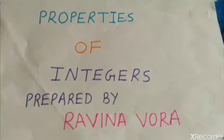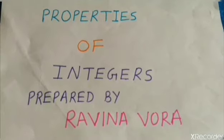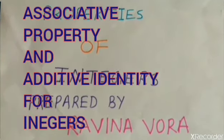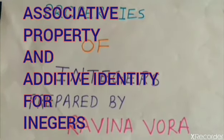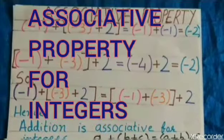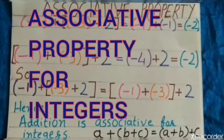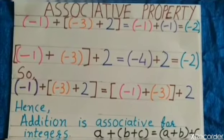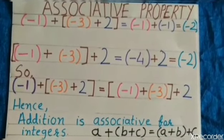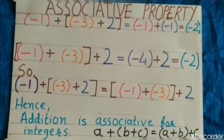Now, we will learn associative property and additive identity for integers. Associative property. Associative property, it is for the addition of 3 integers.